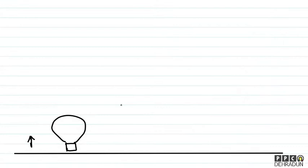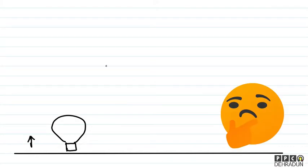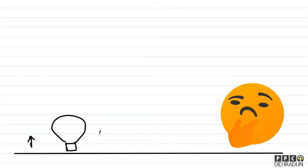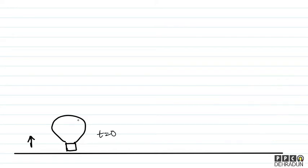So let's try to solve the problem. We assume the balloon starts from ground at t = 0 and if initial velocity is not given, we take u at t = 0, with acceleration 0.2 meter per second square.